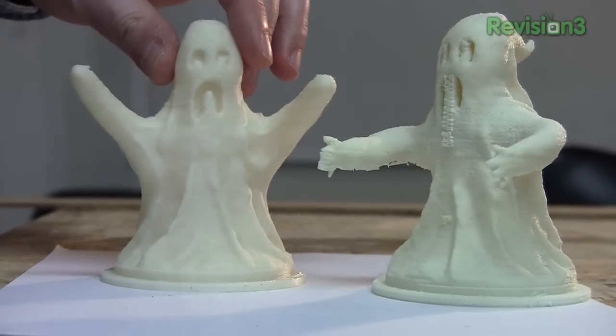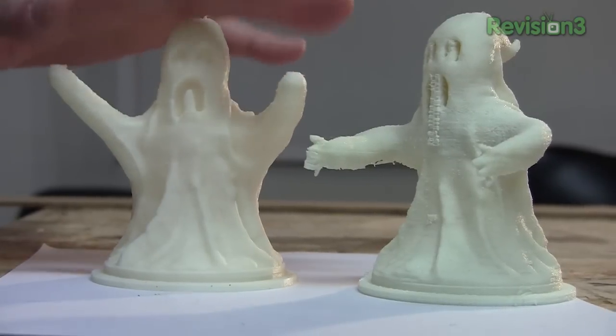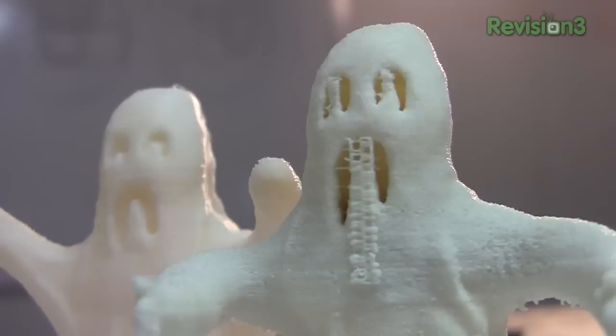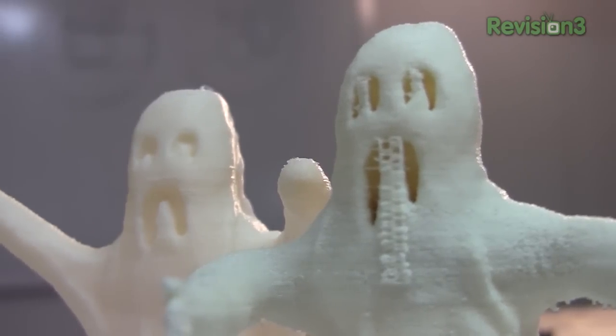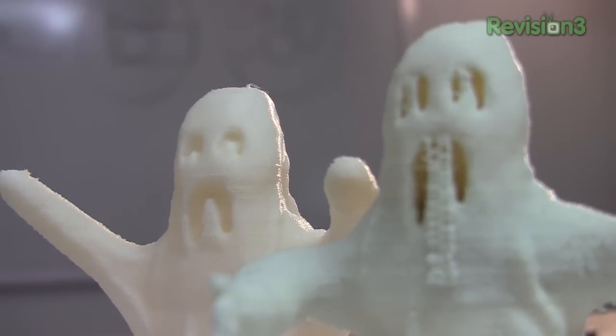The new version of the ghost has arms at a gradual upwards angle, allowing the material to support itself as it prints, thus no supports required. It prints better and faster.